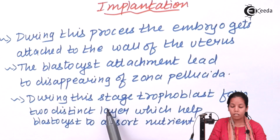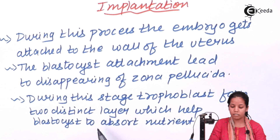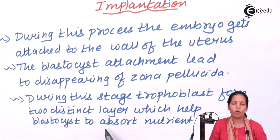During this stage the trophoblast forms two distinct layers, and these two distinct layers help the blastocyst to absorb nutrients and further grow.